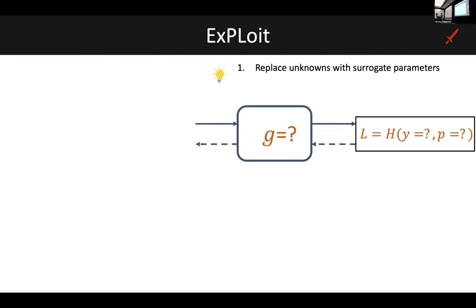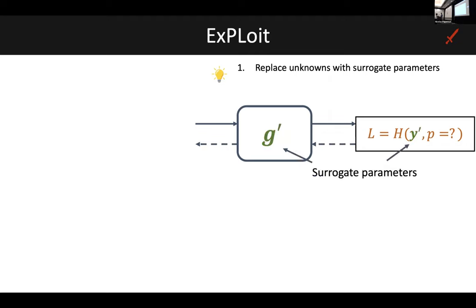To this end, we propose our attack EXPLOIT. EXPLOIT frames the label leakage attack as an optimization problem, and it involves three key steps. The first step of EXPLOIT is to replace all of the unknowns with surrogate parameters. The unknown model G is replaced with a surrogate model G prime, which is randomly initialized. The unknown labels Y are replaced with randomly initialized surrogate labels Y prime.